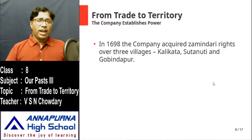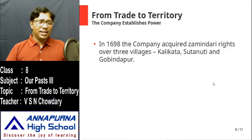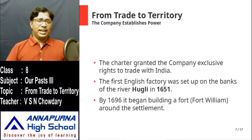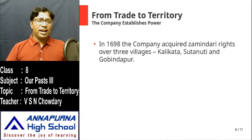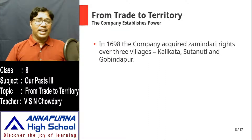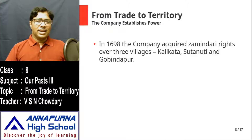So you can see how the company was gradually progressing. Initially they were only traders with no place; later they acquired a small place and built a factory, then they built a fort. Now in 1698 — just two years after building the fort — they acquired Jamindari rights. Jamindari rights means the right to collect tax. They got these Jamindari rights over three villages.